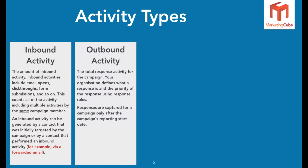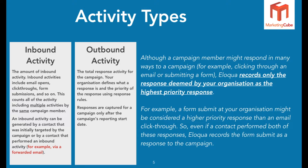Outbound activity is the response activity for the campaign - this is where you as an organization need to define what outbound activity is, and we call them responses effectively. Your ability to not only assign what responses are but also provide a ranking order - the number one type of response going down - you can do that through the Setup area in the back end of Eloqua. Your administrator would typically be the person to do that, but it would be something as a team you'd want to discuss. A campaign member might respond in many ways to a campaign, but Eloqua records only the response deemed by your organization as the highest priority response.